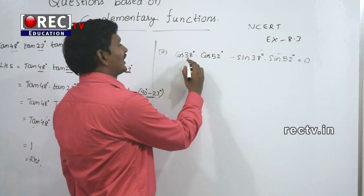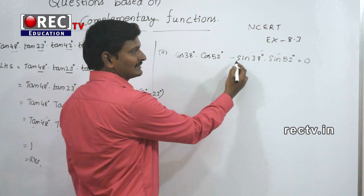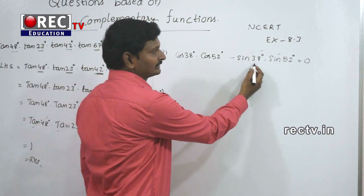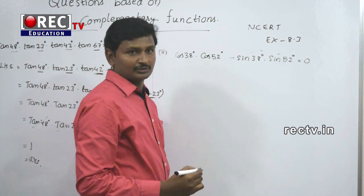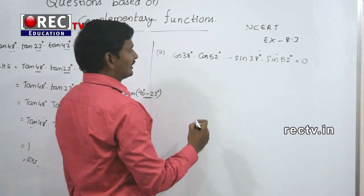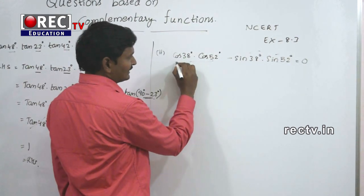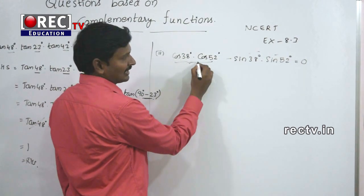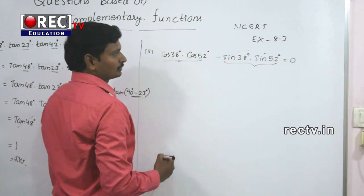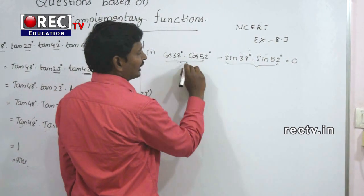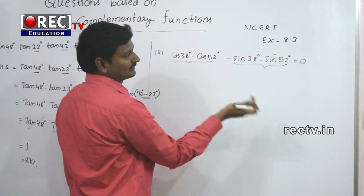Third question: show that cos38° × cos50° - sin38° × sin52° = 0. We observe that LHS has both cos and sin terms, so we need to convert one into the complementary function of the other.